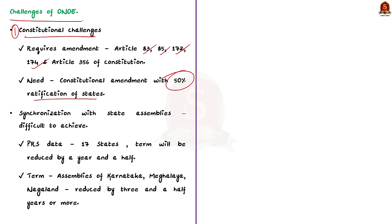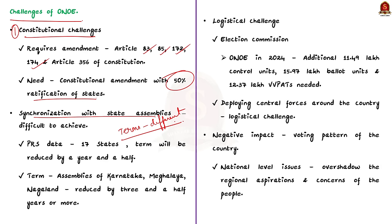Secondly, achieving synchronization with various state assemblies is difficult. The terms of different state governments vary with the term of the Lok Sabha. To conduct simultaneous elections, the center will have to make an agreement with states to either curtail or extend the terms of their houses, which is a major challenge. Thirdly, there will be a logistical challenge. According to a report by the Election Commission, for simultaneous elections in 2024, an additional 11.49 lakh control units, 15 lakh ballot units, and 12 lakh VVPAT machines will be needed.